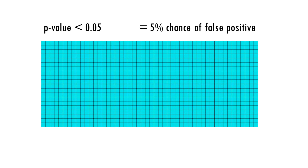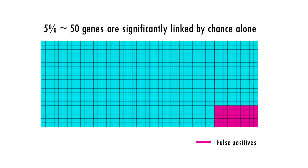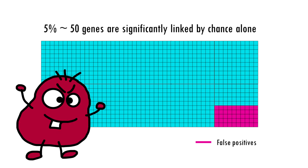We're talking about a 5% chance of being wrong — a 5% chance of saying a gene is linked to being a morning person when it is actually not. To be honest, 5% are pretty good odds. It would be fine if it were one gene. The problem is that we are not testing one gene, but a thousand. This already means that around 50 genes will be wrongly classified as significant.